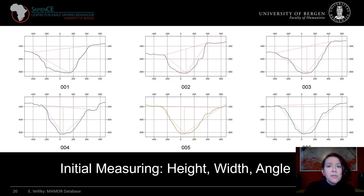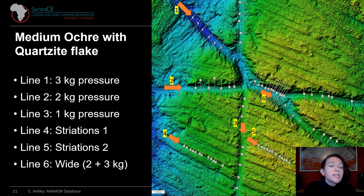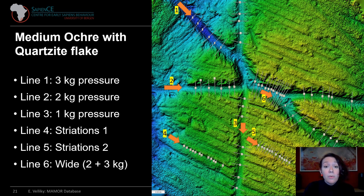The development of this database and protocol setup has taken quite a lot of time, but we do have some pilot data. These concern the initial measurements on the height, width, and angle of each of the markings following the Bellow method, which is widely used for measuring cut marks on bone. I will present data from six lines on a medium-hard piece of ochre made with a quartzite flake at three different pressures, as well as two grinding striations resulting from grinding the ochre against a flat granite rock. We also noticed that the two and three kilo lines have a small part where they overlap, so we included this and labeled it as wide.